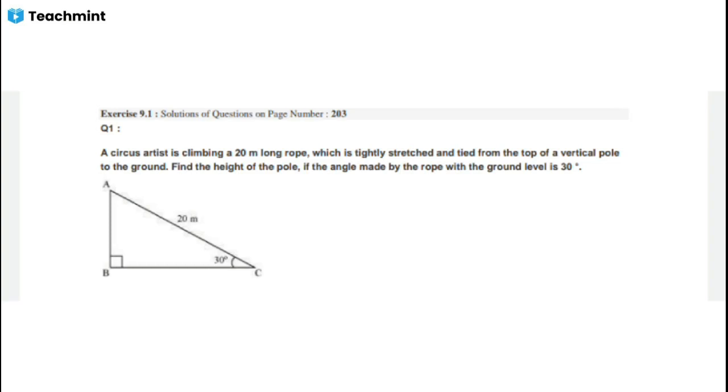AC, which is tightly stretched and tied from the top of a vertical pole to the ground. This is AB, which is the pole, and here we can see the rope.